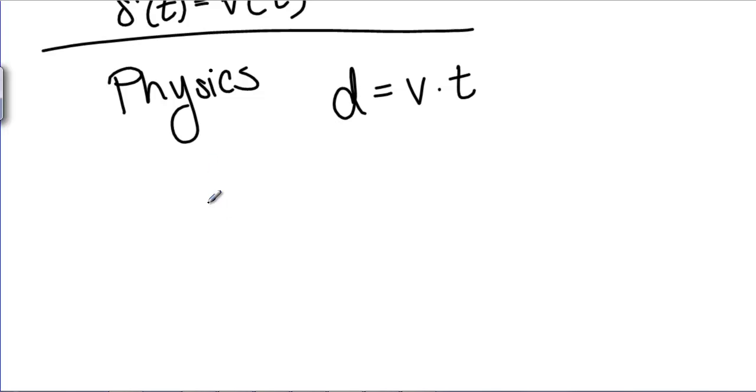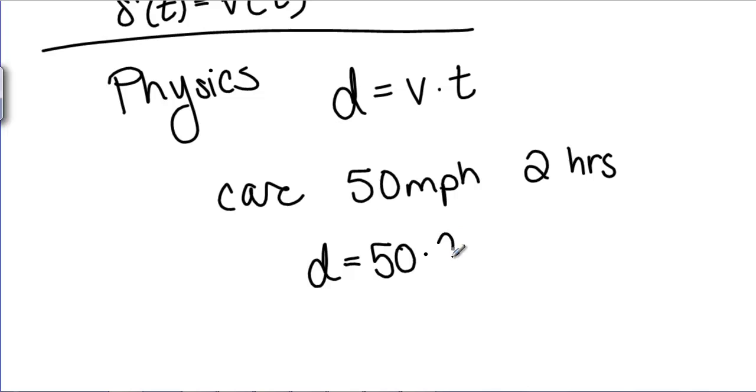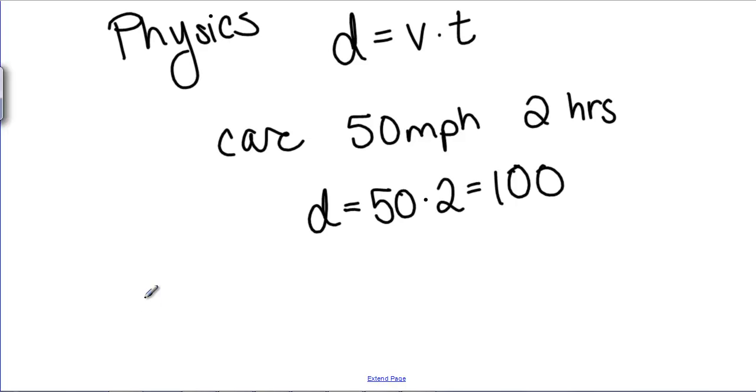For example, if we know that your car was going 50 miles per hour for two hours, we can say that the distance you traveled is 50 miles per hour times two hours, which is 100. But if we give this a geometric interpretation, we can graph it. Here's my velocity graph, V of t, it's 50, and I want to know V of t after two hours. Then what I'm actually finding is the area of this rectangle right here, or the area under the velocity curve.